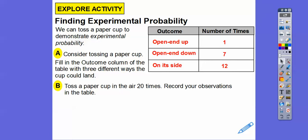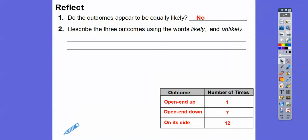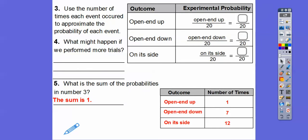Open-ended up, where I can pour water in it, happened one time out of 20. Open-ended down happened seven times. And on its side, that's where it most of the time landed, was 12 times. Do the outcomes appear to be equally likely? No way. Describe the three outcomes using words like likely and unlikely. Unlikely was when it landed open-ended up. On its side was when it happened most of the time, so that would be likely. This would be somewhat likely. So on its side I would say most likely, open-ended down somewhat likely, and open-ended up unlikely.